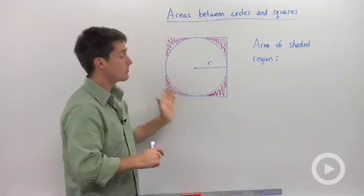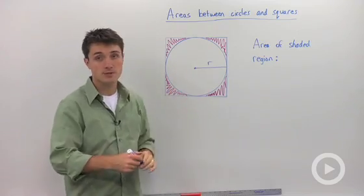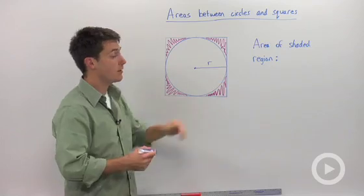So here we have an inscribed circle where we've got four points of tangency and all we know is the radius. So we're going to test you for the area of the shaded region.